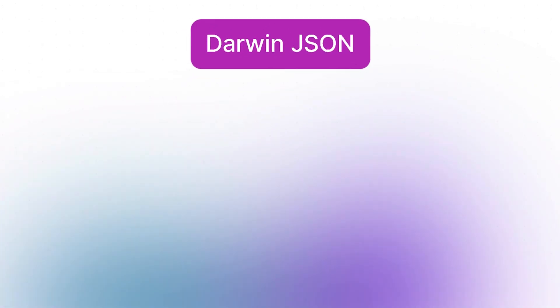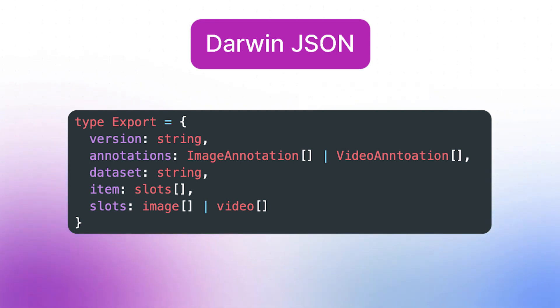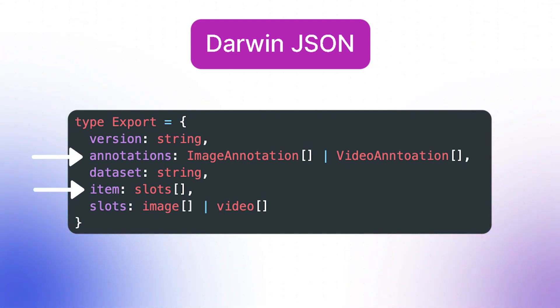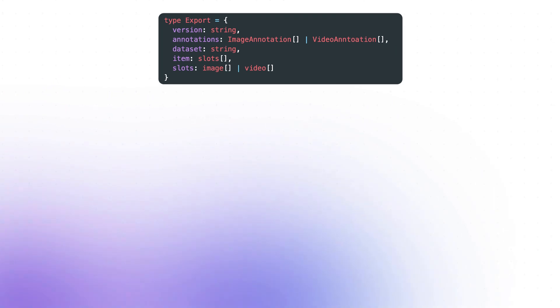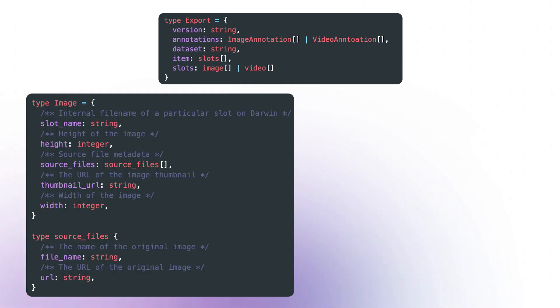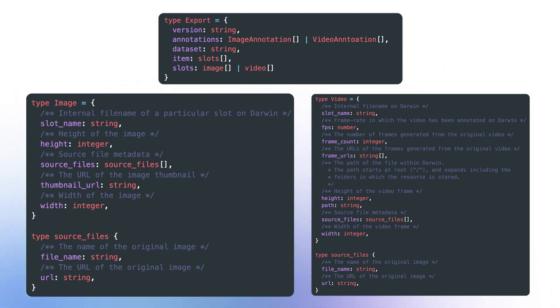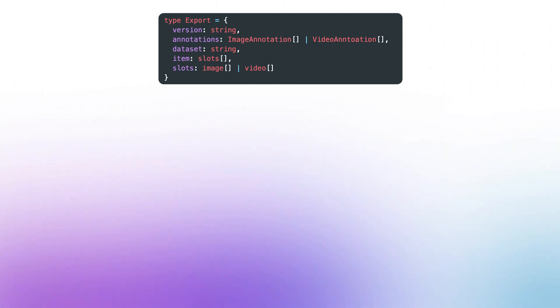That said, the default and most versatile format is our own Darwin JSON format, so let's have a brief look at how it is defined. The content of each Darwin JSON file can be summarized by the following specifications. An export includes all the information about the exported resource. The dataset field simply encodes the Darwin dataset name that the resource belongs to. The slots field describes a resource that can be of type image or video uploaded to Darwin, including its original metadata. The version field will simply be 2.0 when the export format is Darwin JSON 2.0.